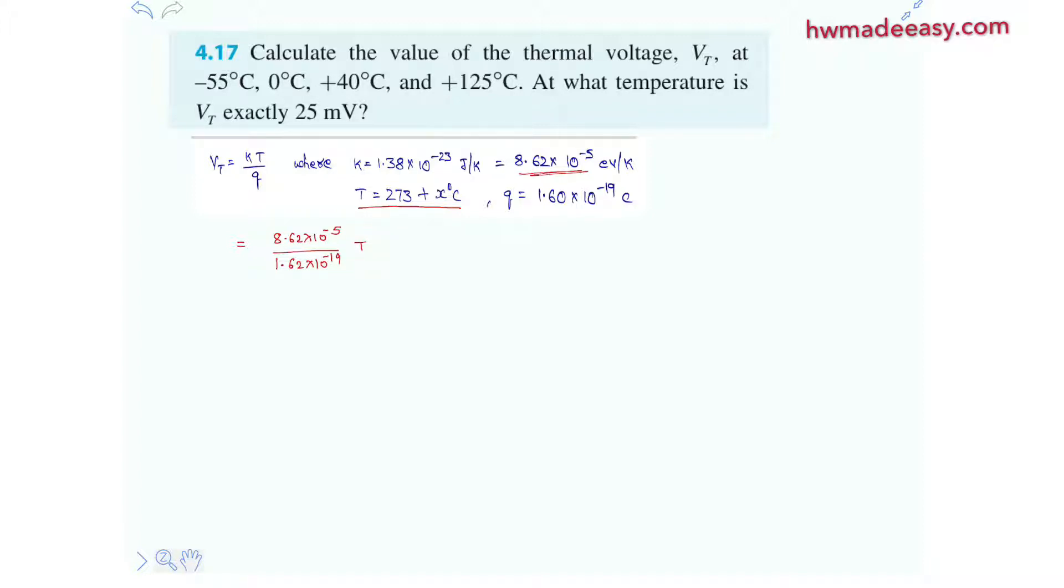Let's use a calculator now. 8.62 multiplied with 10 to the power of minus 5 divided by 1.6 over 10 to the power of minus 19. Actually we are already taking Boltzmann constant in electron volt per degree Kelvin, so directly we can multiply with T.